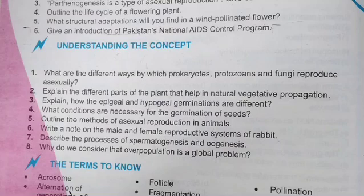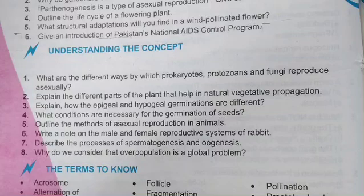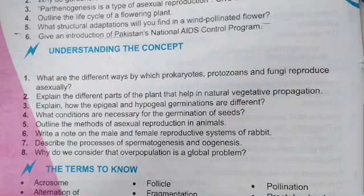The seventh question: describe the process of spermatogenesis and oogenesis. Spermatogenesis is the production of sperm cells and oogenesis is the formation of egg cells. We will discuss the spermatogenesis process and oogenesis, which involves the formation of the egg.